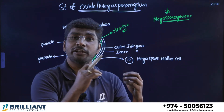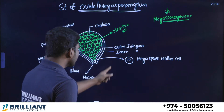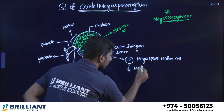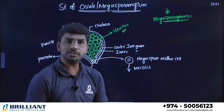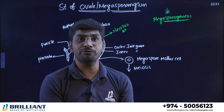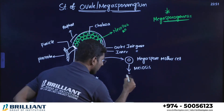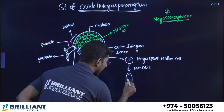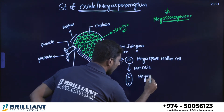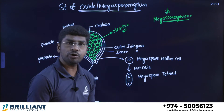The mega spore mother cell, which is towards the micropyle end, undergoes meiosis division. Just as in microsporogenesis the microspore mother cell undergoes meiosis to form the microspore tetrad, here the mega spore mother cell undergoes meiosis to form the megaspore tetrad — a linear arrangement of four haploid cells.